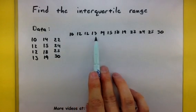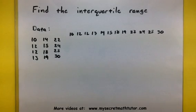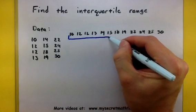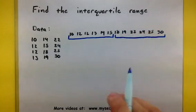This looks like I have a total of 1, 2, 3, 4, 5, 6, 7, 8, 9, 10, 11, 12 numbers. So I can talk about the lower six numbers and the upper six numbers and find the median for each of these.